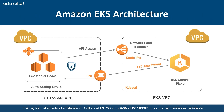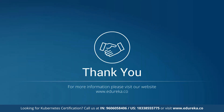The EKS architecture includes an EKS VPC and a customer VPC connected via an ENI (Elastic Network Interface). It includes a load balancer so worker node traffic is forwarded to the EKS control plane, and a network load balancer handles load balancing and traffic management towards the control plane.